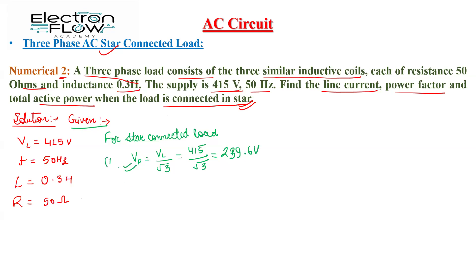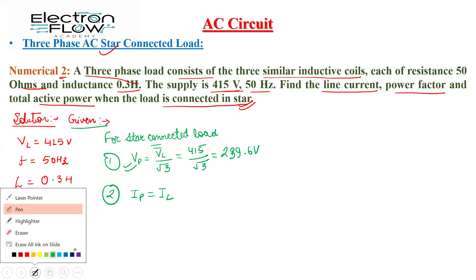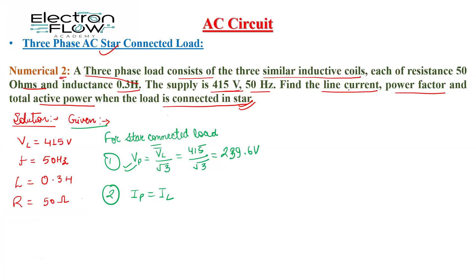For a star-connected load, the phase current is equal to the line current. Next, we need to calculate the impedance per phase.